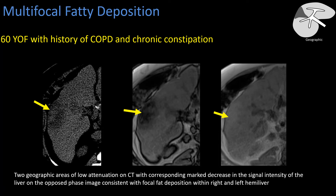At times fatty deposition can be very heterogeneous. This person appears to have underlying liver disease — we can see nodularity, abnormal morphology, and a geographic area of heterogeneous hypo-intensity on CT. On CT, that hypo-intensity has a differential that includes neoplasm and infection. This person did go to MRI, and we can see that the area was a region of focal fat deposition that was quite heterogeneous and somewhat mass-like, raising concern for metastasis or primary hepatic neoplasm.